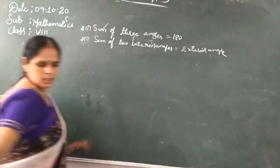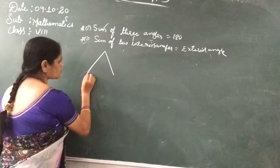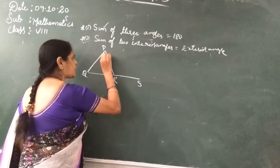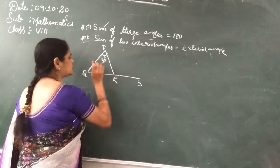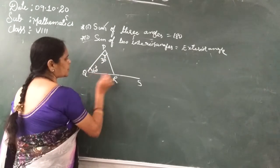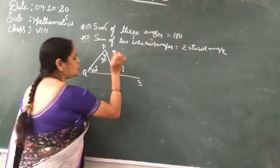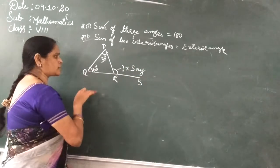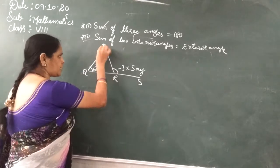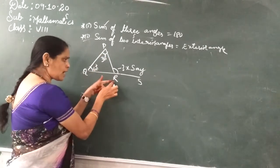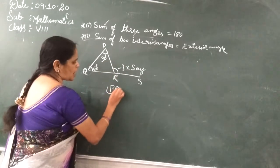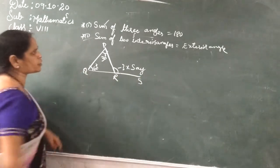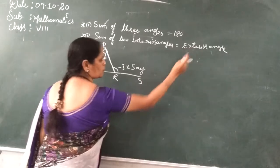Come to the point. Suppose this is triangle P, Q, R and S. Angle P is 30 degrees and angle Q is 60 degrees. You have to find out angle R. Let angle R equal X. First we have to understand what are interior angles. Angle P is an interior angle, Q is an interior angle, but angle PRS is an exterior angle. So which property do you have to use? Sum of the interior angles is equal to the exterior angle.